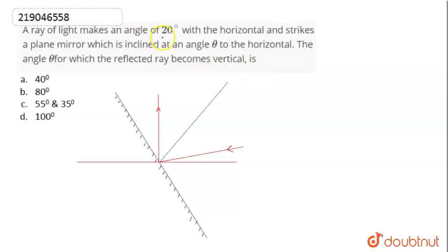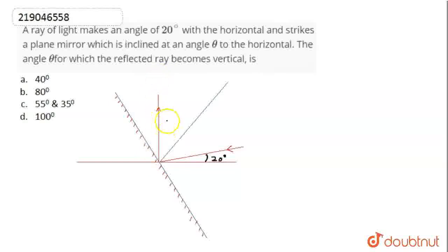In the question, there is a ray which makes 20 degrees with the horizontal — this is the incident ray. When it strikes a plane mirror, the reflected ray goes in the vertical direction. The plane mirror is inclined at an angle theta to the horizontal. This is the angle theta.